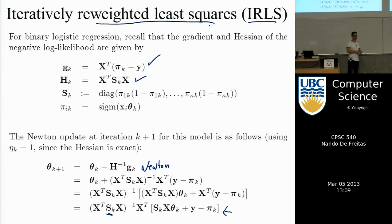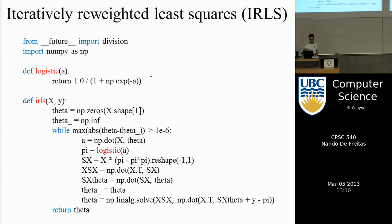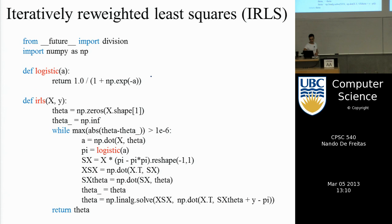When we do neural networks, we will follow exactly the same recipe: write the likelihood, find the derivative, and that gives us the learning algorithm. Learning is just following the gradients, or following the gradients weighted by the Hessian. The code is in the slides — implementing this is very simple, just a few steps.